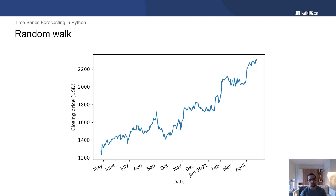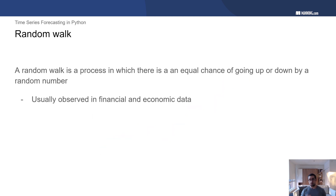Let's understand why. Here's an example of a random walk: the closing price of the Alphabet stock, which has the ticker Google, taken from May 2020 to end of May 2021. There is some kind of trend — it's increasing over time, sometimes going up, sometimes going down. A random walk is defined as a process in which there is an equal chance of going up or down by a random number. This type of data is usually observed in financial and economic data.